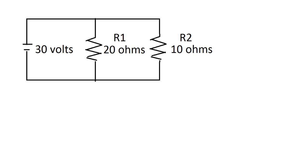Alright, so we have a circuit that has 30 volts going to it. There's two resistors in parallel. One's 20 ohms and one's 10 ohms.